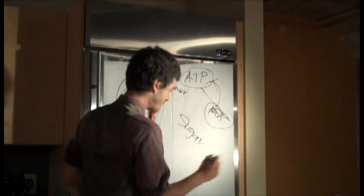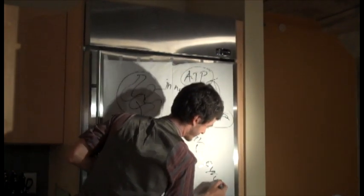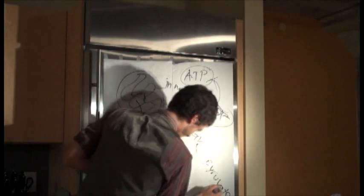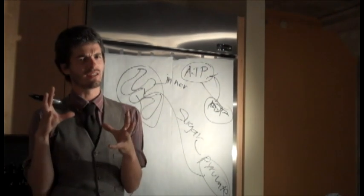The cell eats sugar. Sugar gets broken down into pyruvate, and pyruvate gets transferred into the middle of the mitochondria. What the mitochondria is going to do is break down the pyruvate. Over the course of it being broken down, it's going to produce all these high-energy electrons.